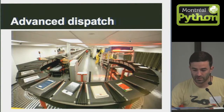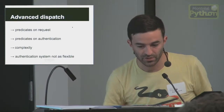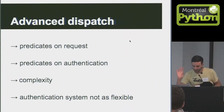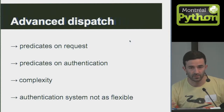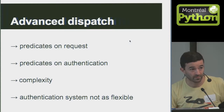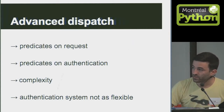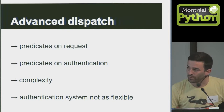The advanced dispatch aspect of Pyramid is really powerful — I'm only presenting a tiny part of it. You can do predicates on requests, and you can even add your own predicates, which is really handy. You can also do predicates on authentication. The main problem is it can become really complex — the more routes and pages you have, the more tedious it becomes to figure out where a given URL pattern is mapped. Hopefully Pyramid provides scripts like p-routes so you can list your routes and views. There's also complexity in authentication — you can only set one authentication policy, but again, you can extend it.